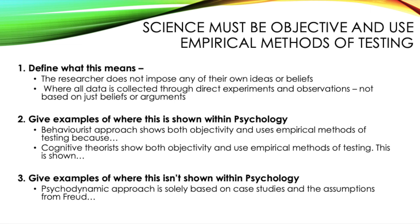You'll also want to give examples of where this isn't shown within psychology. The psychodynamic approach was based upon case studies and Freud's assumptions, and cannot undergo testing because it was mainly based upon the ideas of the id, ego, and superego, which are just constructs within your mind. It's always nice to give examples of where objectivity and empirical testing both is and isn't shown, to keep a balanced argument. Depending on the style of question, you may want to give your conclusion here, summarising whether psychology is objective and uses empirical methods of testing, and linking back to the question.